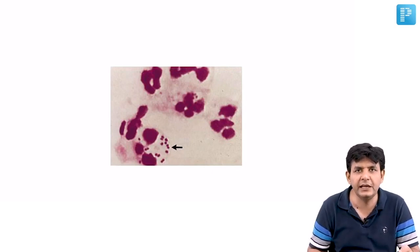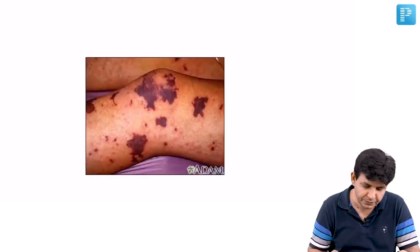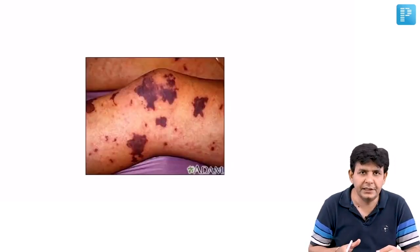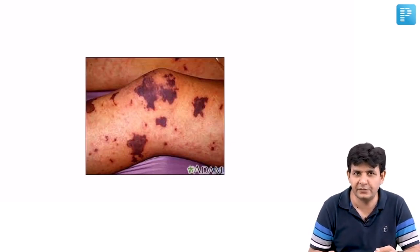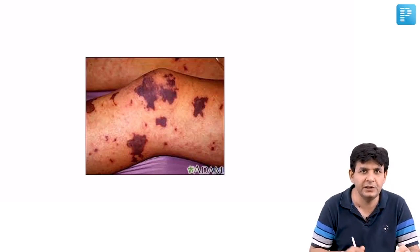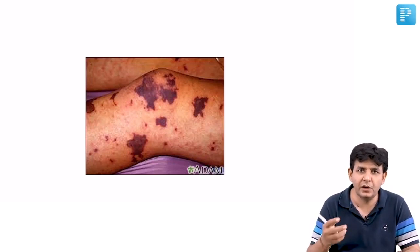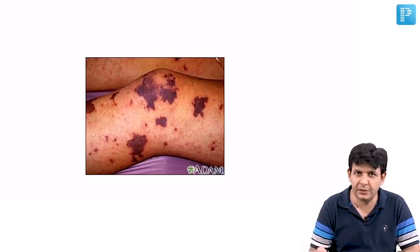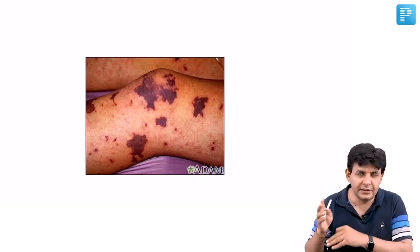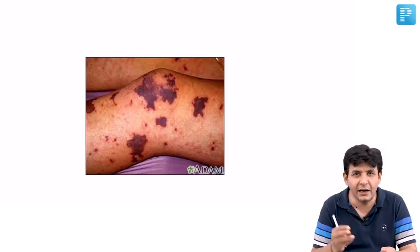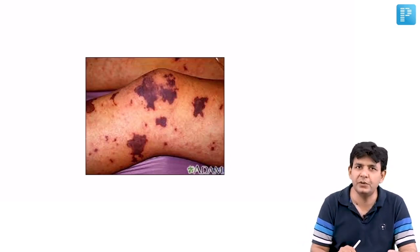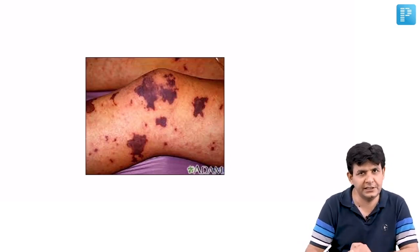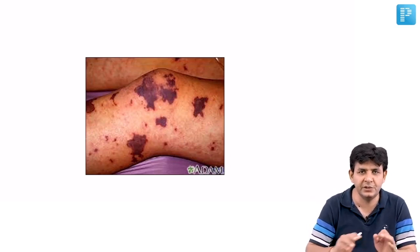These findings indicate meningococcemia. This happens because of the lipooligosaccharide (LOS) of the organism, which leads to endotoxic shock or meningococcemia. Fever, headache, neck rigidity along with a rash — when these features are written in the question, you have to focus on meningococcal meningitis.